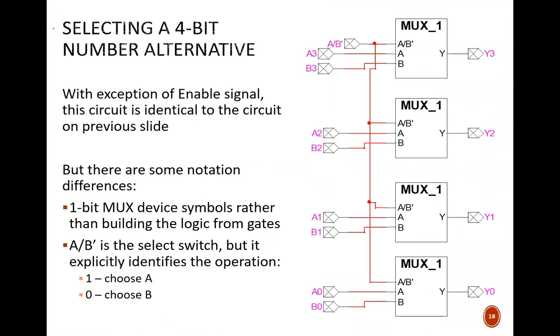On this slide, we take advantage of a fact we just noticed. Each individual bit of the 4-bit MUX is selected with the same strategy as a 1-bit MUX. So, we use a 1-bit MUX device, as explained in the previous video. Notice how this top device accepts the data inputs for A3 and B3. One of them is selected by this select signal and passes through to the output. The repetitive pattern for all the remaining bits is even clearer in this layout.